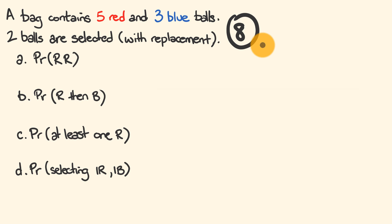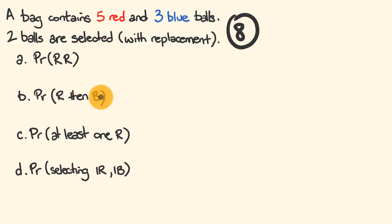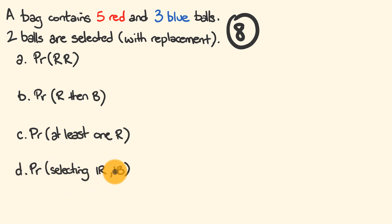With replacement does affect probability. We're going to work out: the probability of getting a red then a red, the probability of getting a red then a blue, the probability of getting at least one red, and the probability of selecting one red and one blue but not necessarily in that order. We're going to use a tree diagram to help us solve this.